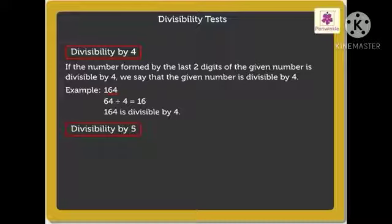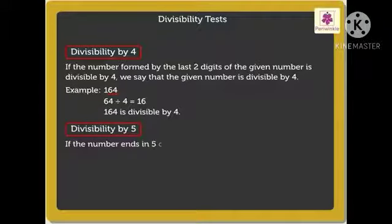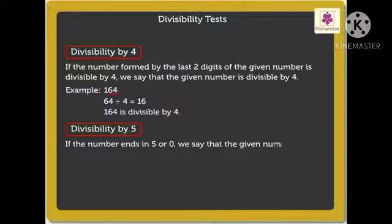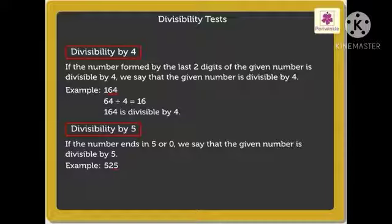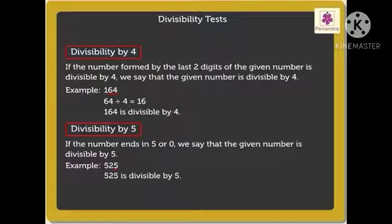Divisibility by 5: if the number ends in 5 or 0, we say that the given number is divisible by 5. For example, 525 — the 1's place has 5, so 525 is divisible by 5.